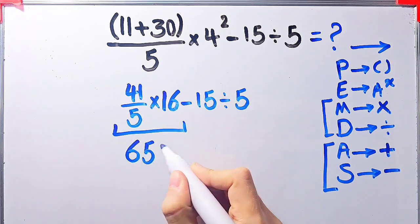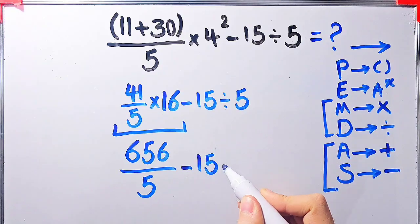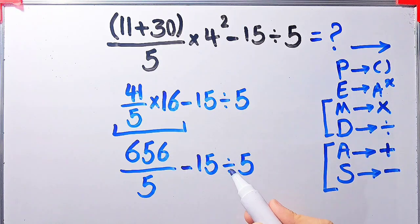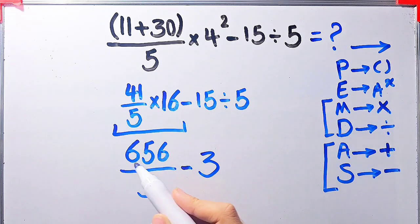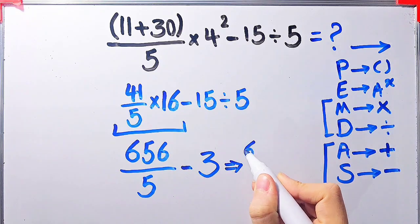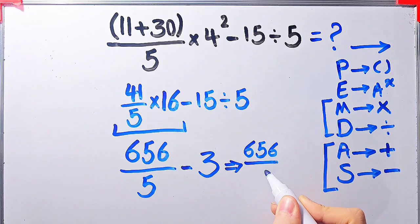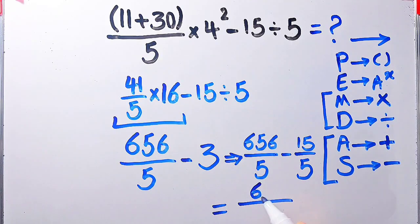Now we have 656 over 5 minus 15 divided by 5. Now we have subtraction and division. We simplify the division first because division has higher priority than subtraction: negative 15 divided by 5 equals negative 3. Now the question is 656 over 5 minus 3. Since the denominator is 5, we write 3 as 15 over 5. So 656 over 5 minus 15 over 5 equals 641 over 5. The final answer equals 641 over 5.